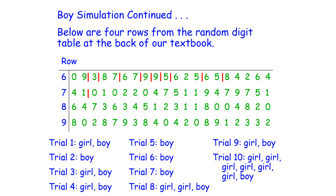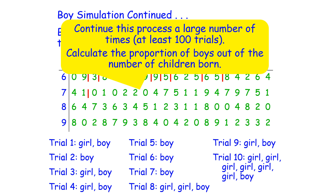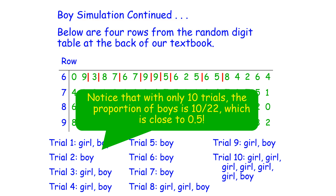You would continue this process a large number of times — at least 100 trials. Then you're going to calculate the proportion of boys out of the number of children born. Notice that here, with only 10 trials, the proportion of boys is 10 out of 22, which is pretty close to 0.5.